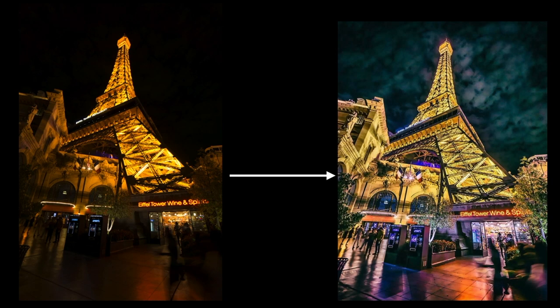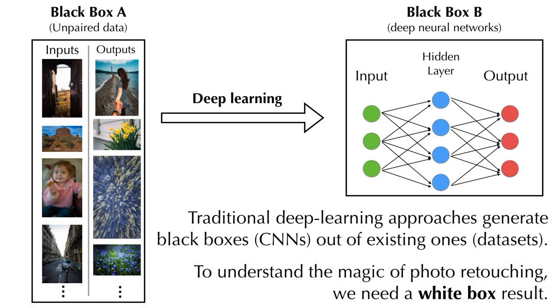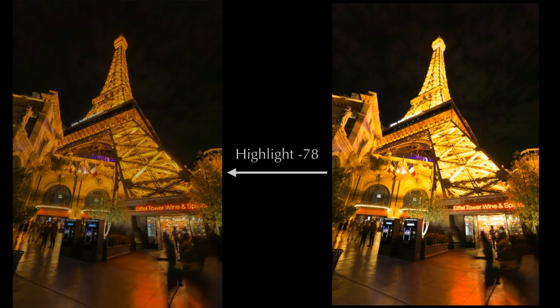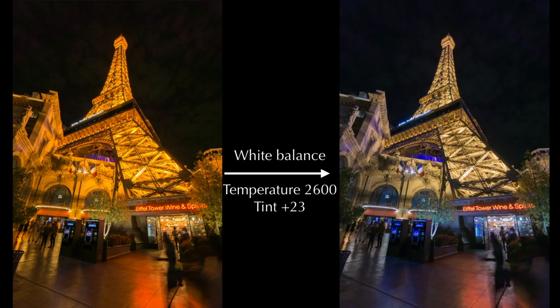Revealing the magic behind photo retouching is challenging. Black-box deep learning approaches help little, because people do not retouch photos with convolutions. Instead, they use stepwise high-level operations.